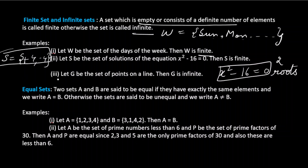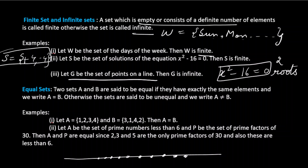Third example: let G be the set of points on a line. A line can have infinitely many points — we cannot count them. Since the elements are infinite, G is an infinite set.